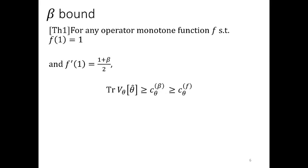We can show that for any operator monotone function f such that f(1) is 1 and the derivative at 1 is (1 + β)/2, the lower bound corresponding to beta is more informative than f.